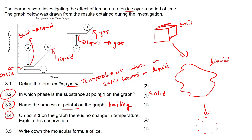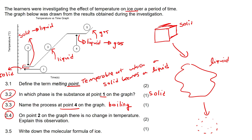This question says: on point two on the graph — point two is over here, where we are busy switching from a solid to a liquid — there is no change in temperature. Explain this observation. In this area here, we can notice that the temperature is not changing. When you are changing from solid to liquid, temperature doesn't change, and also when you go from liquid to gas, temperature doesn't change — and that's what we're going to talk about now.